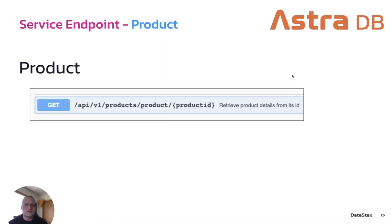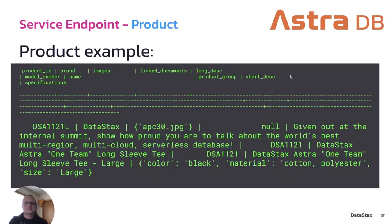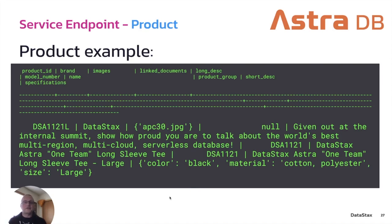For individual products, there's really only one endpoint: the product endpoint. It's very simple — retrieve a single product with a single product ID. Querying our product table for product ID 'dsa1121l' pulls back a long-sleeve large t-shirt described as being from the internal summit — showing pride for the world's best multi-region, multi-cloud serverless database. That's individually how each of the services work.